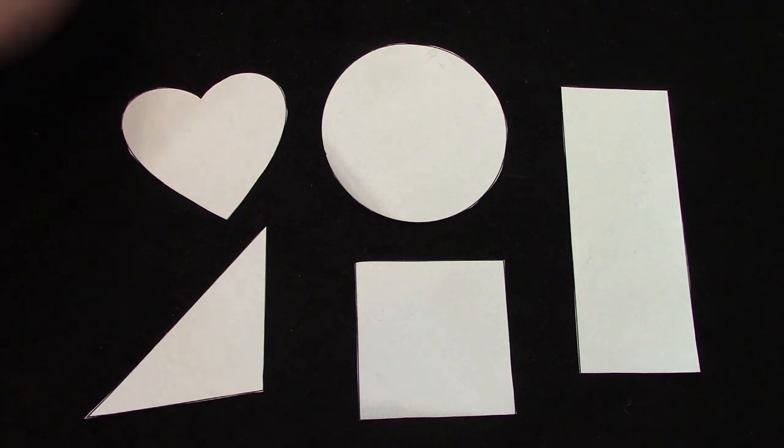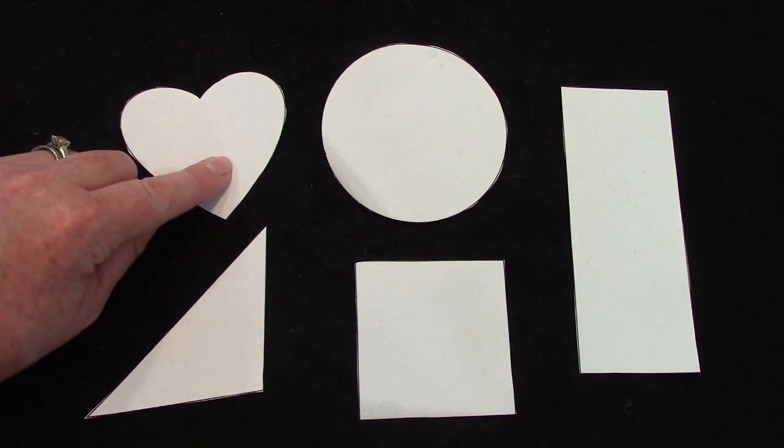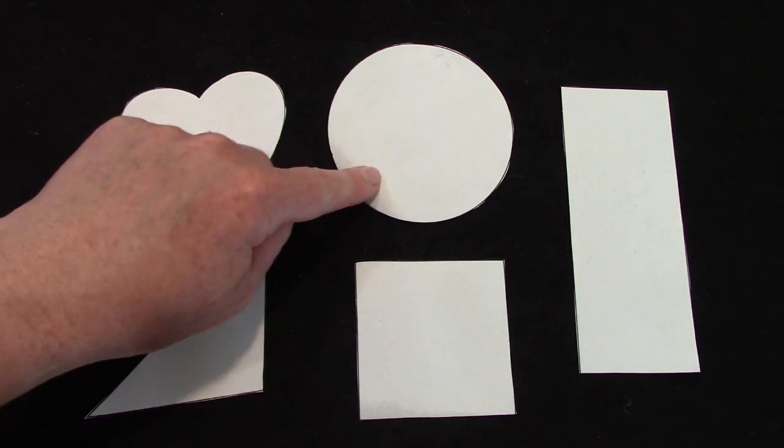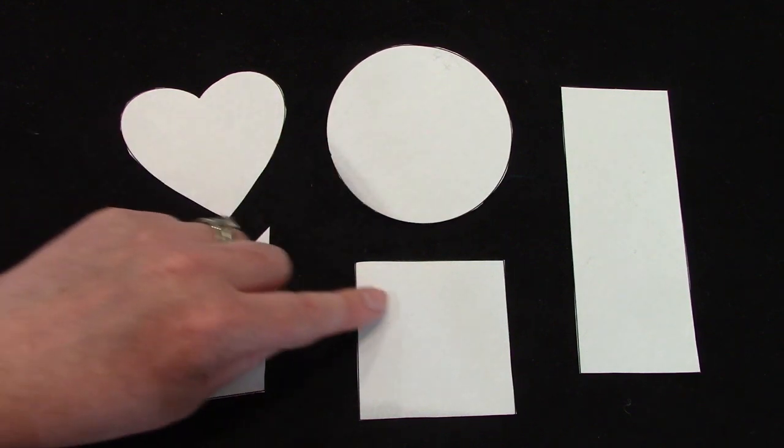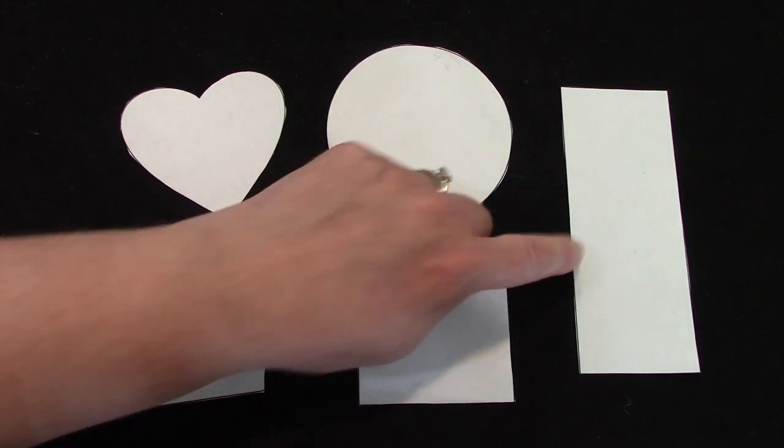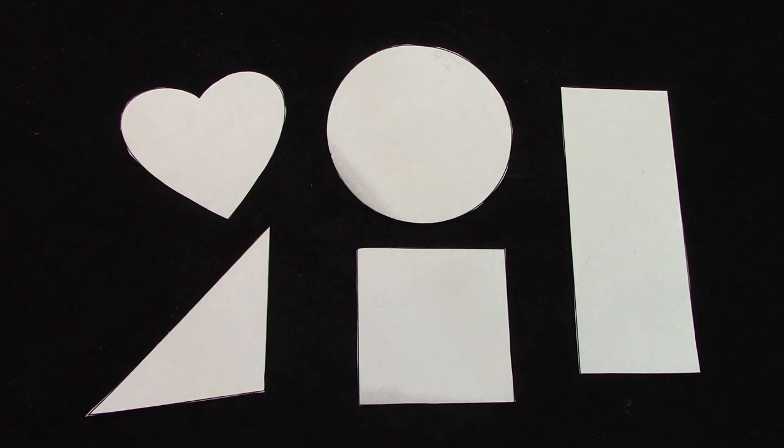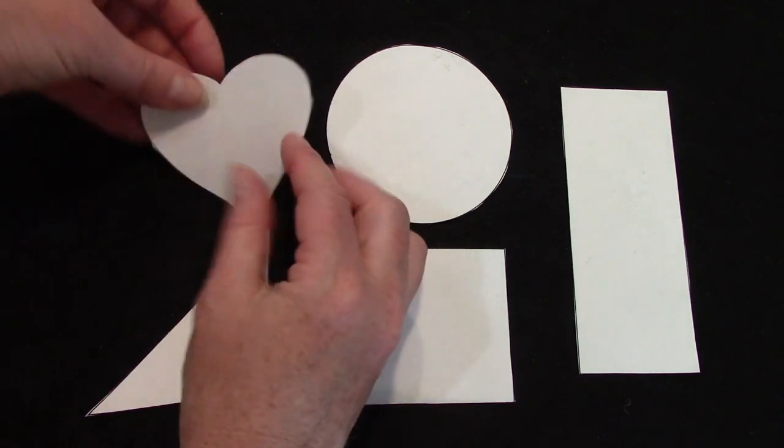Now we are going to look at all of these shapes. We have a heart, and name this one: circle, triangle, square, and rectangle. So we are going to fold all of them in half.